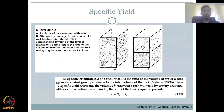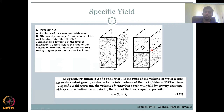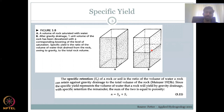Let's look at another figure where A is your volume of rock saturated with water — full of water — and now gravity is acting on it. After gravity drainage, one unit volume of the rock has been de-watered, lowering the level of saturation. Specific yield is the ratio of the volume of water that drains from the rock owing to gravity to the total rock volume. So Q — the unit that came out due to gravity — divided by the total rock volume gives you the specific yield.